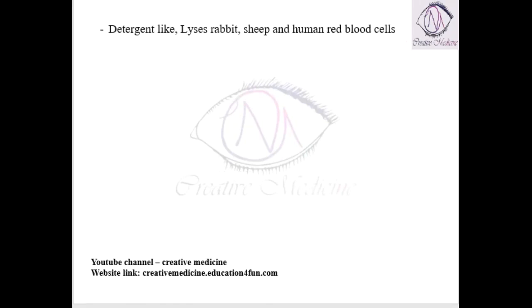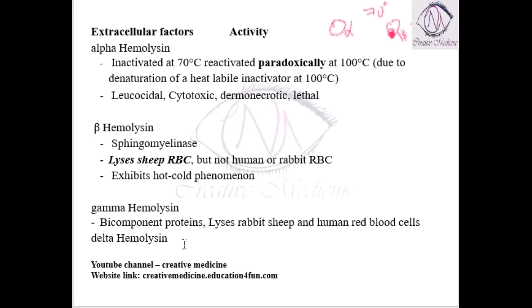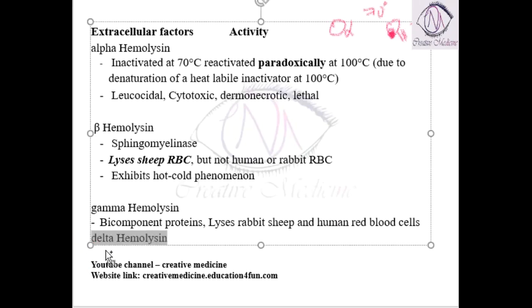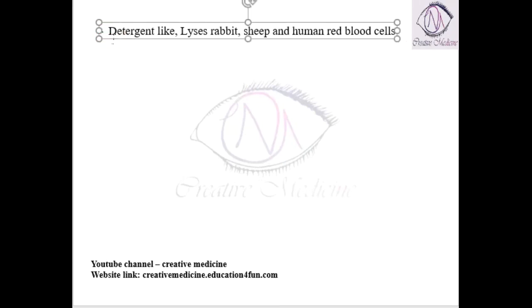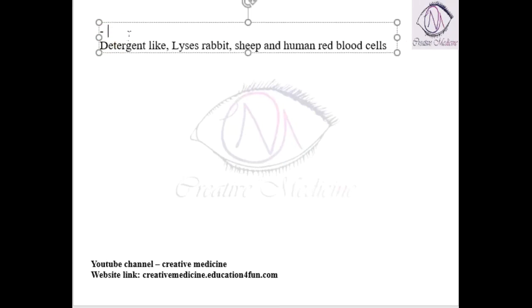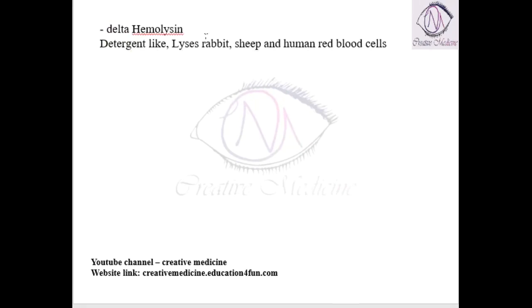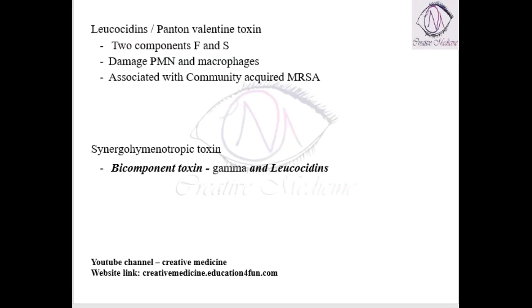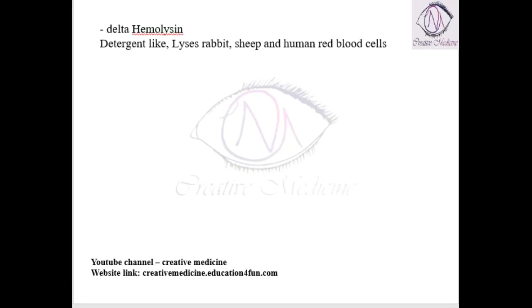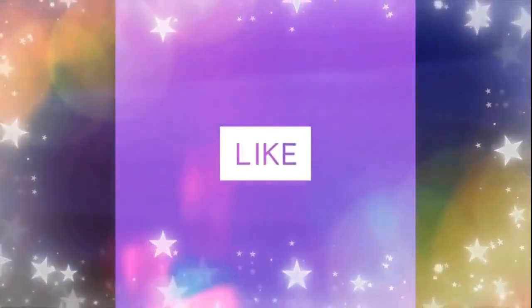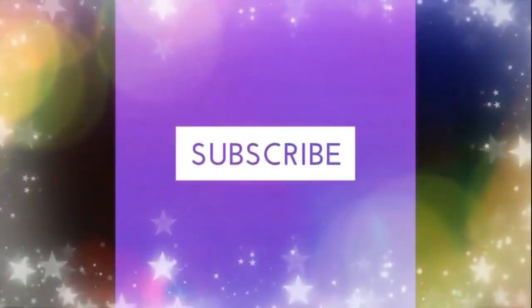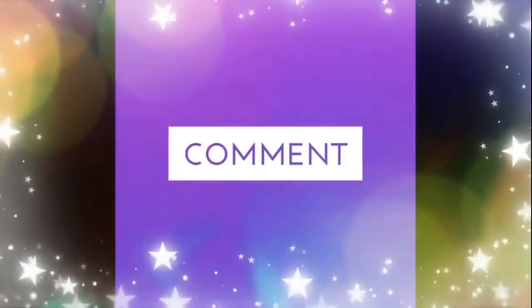Then we have delta hemolysin. This delta hemolysin is detergent-like and it also lyses rabbit, sheep, and human RBCs. Thank you for watching.